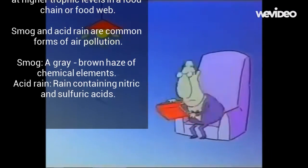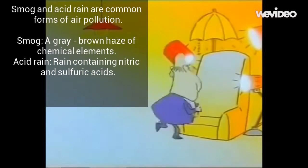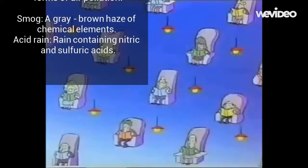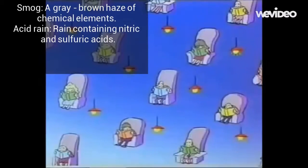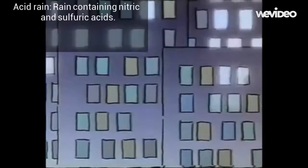Smog and acid rain are common forms of air pollution. Smog is a grey-brown haze of chemical elements, while acid rain is rain containing nitric and sulphuric acid.